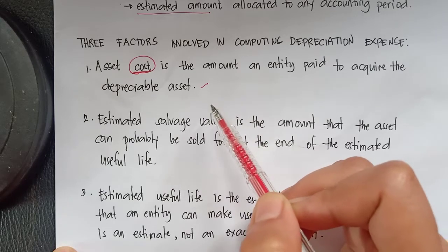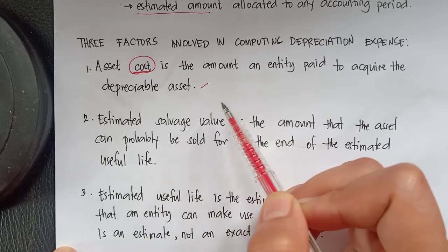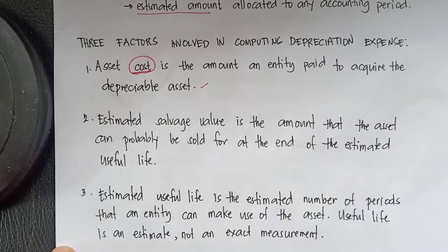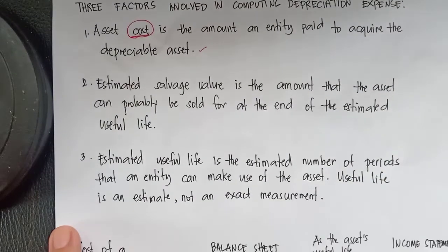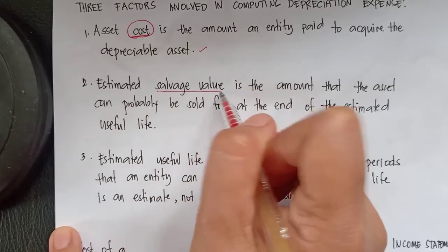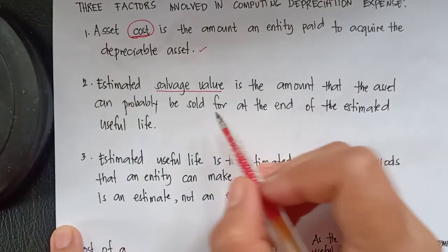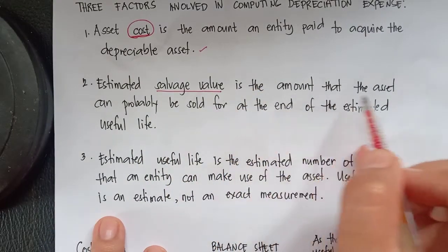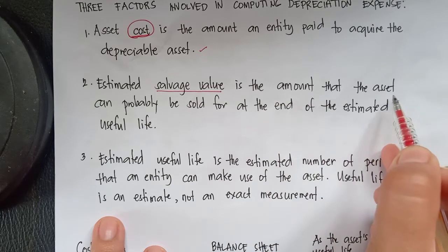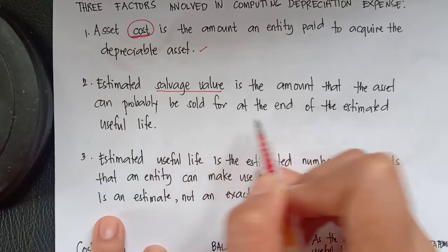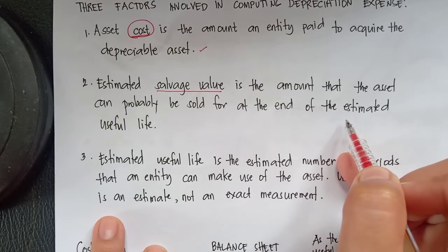That is the amount we paid to buy the depreciable asset, like service vehicles, buildings, computers, or office furniture. The next factor is the estimated salvage value. When we say salvage value, it is the amount that the asset can probably be sold for at the end of the estimated useful life.